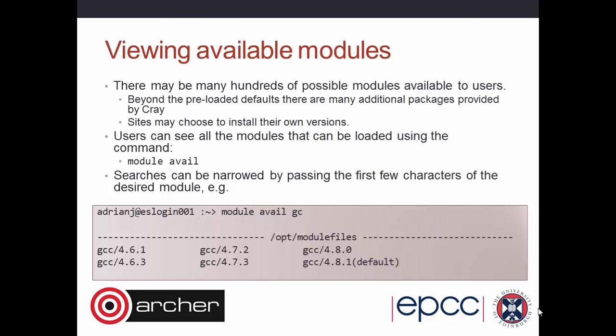If you want to view what modules are available — there are hundreds — you can just type 'module avail'. That will give you an awful lot of output. If you want to narrow it down, you can type the first couple of letters. For example, to see which versions are available from the GNU compiler collection, you do 'module avail GC' and it will show everything beginning with GC. You can see we had many versions of GCC loaded, but the default is 4.8.1 — so typing GCC will give you 4.8.1. If you want a different version, you don't type a different command; you still type GCC but load a different module.